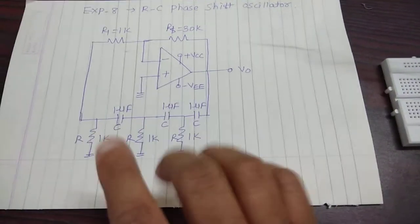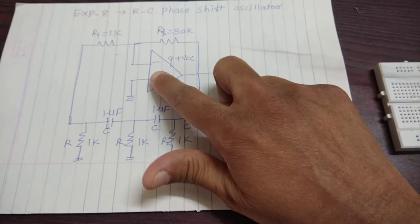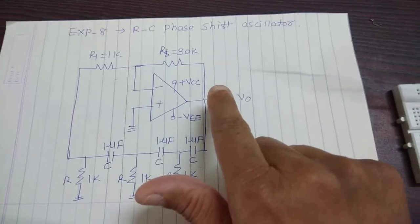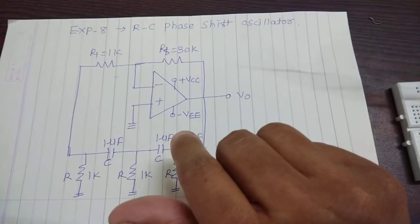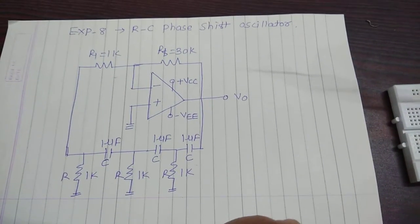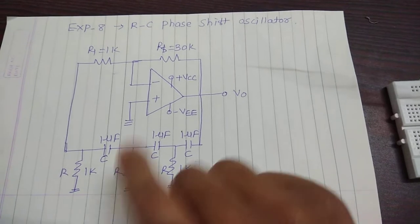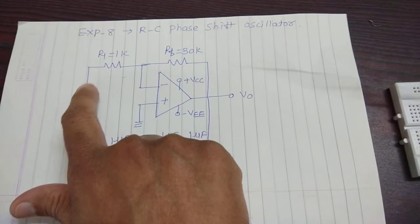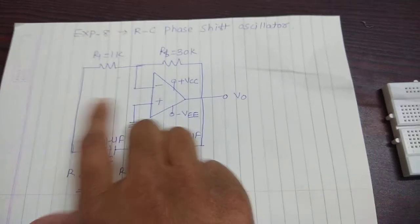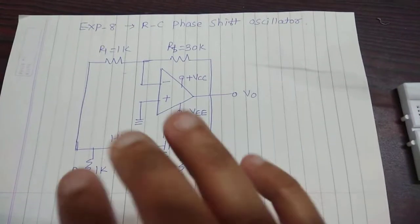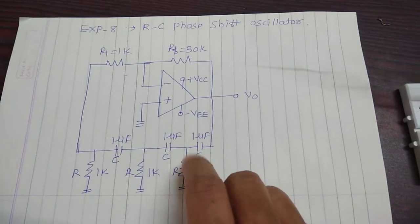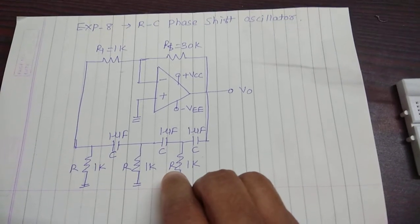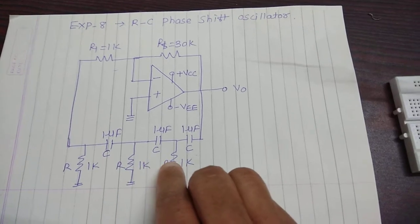Another 180 degree phase shift is provided by the negative terminal, or the inverting terminal, which connects the R1 resistor and the RF resistor. As we know, the oscillator provides a total 360 degree phase shift. That 360 degrees is divided into two parts: 180 degrees provided by the inverting terminal of the op-amp, and another 180 degrees provided by the three RC combinations.